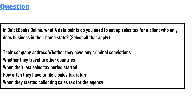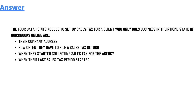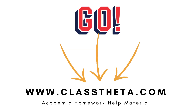The answer to the question is: there are four data points needed to set up sales tax for a client who does business in the home state in QuickBooks Online — the company address, how often they have to file the tax return, when the last sales tax period started, and when they started collecting tax for the agency.